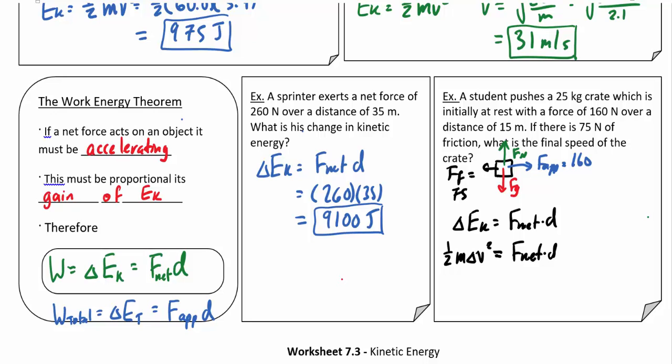Now solving this for V, I'm going to get the square root of 2 F net times D all divided by m. It's worth pointing out that we start off at rest. So the change in velocity is normally V final minus V initial, but notice that V initial is 0. So in this case, the change in velocity is the final velocity, or the final speed I should say. And that's what we're looking for.